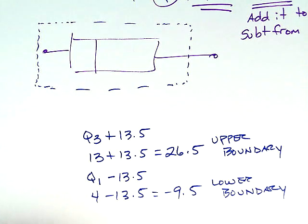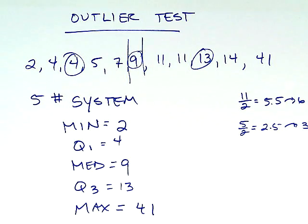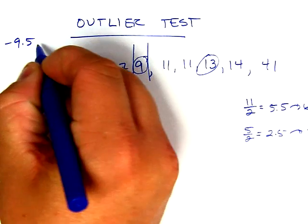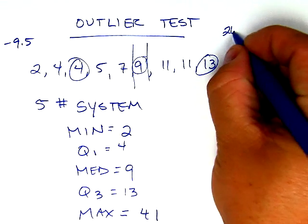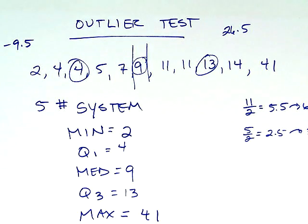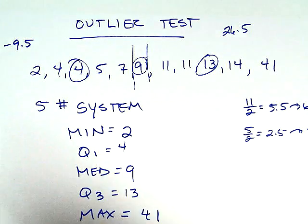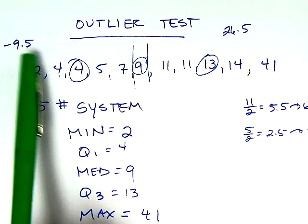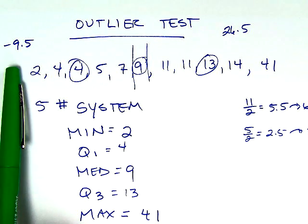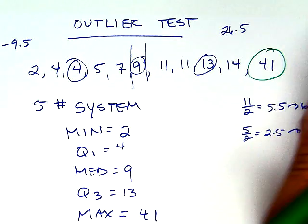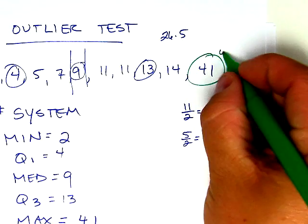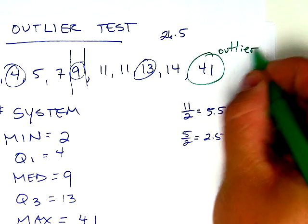Now I want to take these two numbers of 26.5 and negative 9.5 and go back up to my data set. I have negative 9.5 on the lower half and 26.5 on the upper half. What I want to ask myself is, are there any numbers within this data set that lay outside of that? Obviously my smallest number is 2, so there's nothing down here. But what about this 41? It's bigger than 26.5. That right there becomes my outlier.